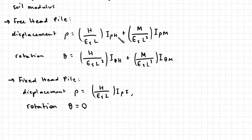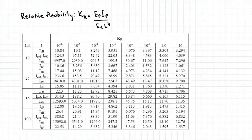To determine the factors IPF, IPM, IFH, IFM, and IFF, we need to first determine the relative flexibility factor KR given by this equation. IP here is the second moment of area of the pile. Once we know KR, we need to find the ratio of L/D, and we can then determine the I factors from this table.